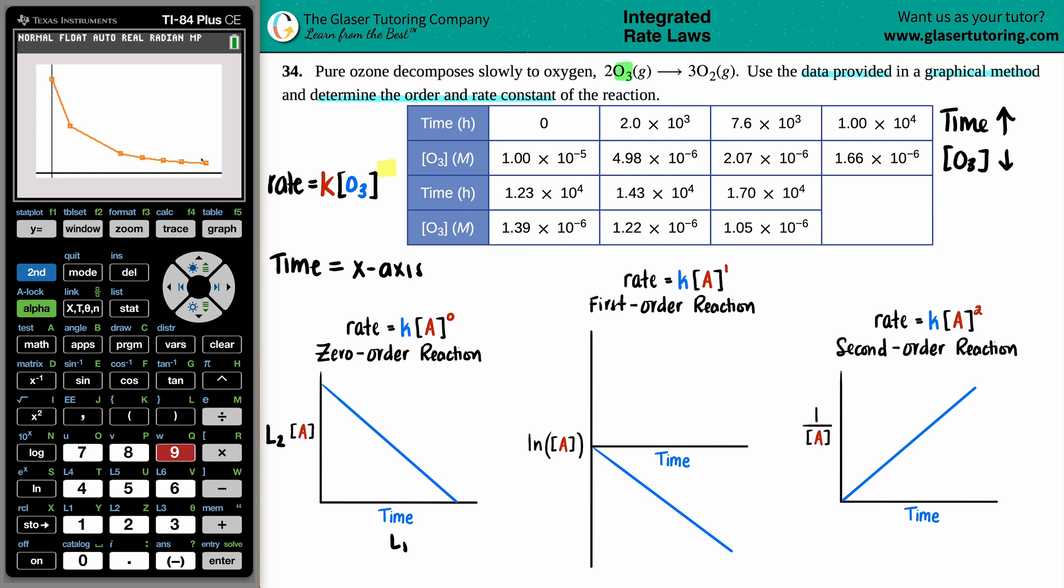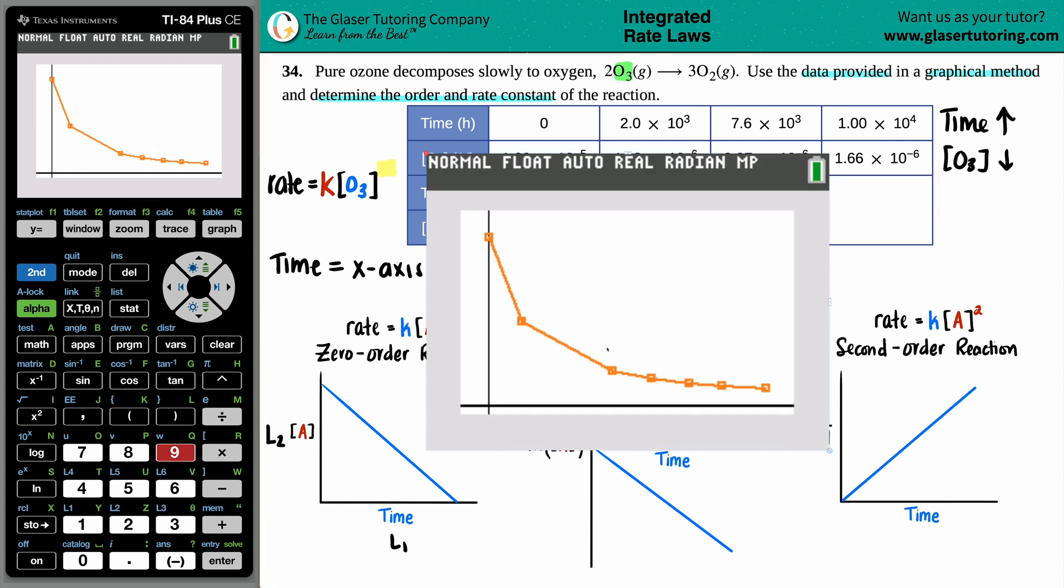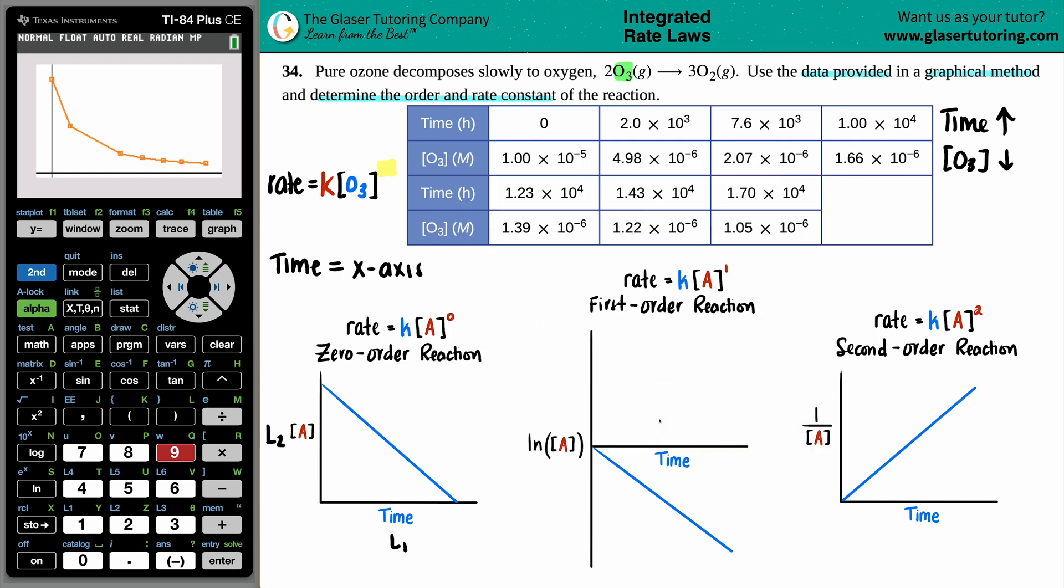But now all we have to do is just find the graph, and what we do is we press zoom, and you want to go down to the zoom stat, or you could just press 9. And there it is. So did we get the straight line? Definitely not. A straight line would be something like this. It is definitely not a straight line. It tails off at the end, and we have something like this. It needs to be a complete straight line. So unfortunately, we tried zero order, but it's not the right one. So I'm just going to get rid of this. And we move on to the next part. Would it be a first order reaction?